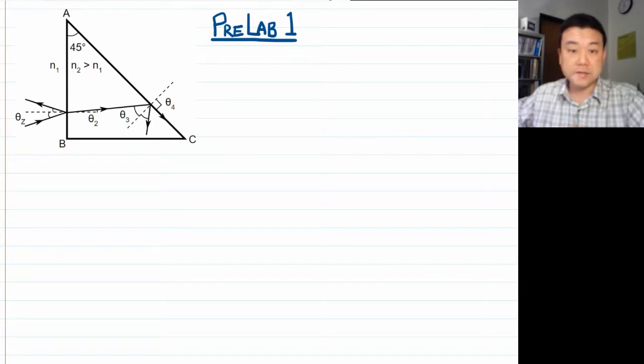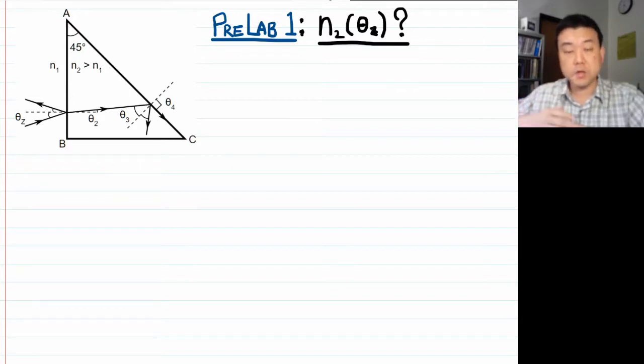The question asks you to express the index of refraction of the prism as a function of theta z, which is the only parameter you can measure in lab. It's not an easy question and it takes a detailed step-by-step problem solving, which is why I thought this would make a good example.